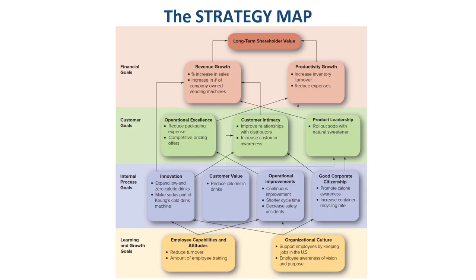Here is an example of a strategy map — a visual representation of a company's critical objectives and the crucial relationships among them that drive overall organizational performance. The maps show relationships among a company's strategic goals and help employees understand how their individual work contributes to the organization's overall success. Starting with learning and growth, the arrows in the diagram show the logic connecting goals to internal processes, to customers, to financial goals, and finally to providing shareholder value.